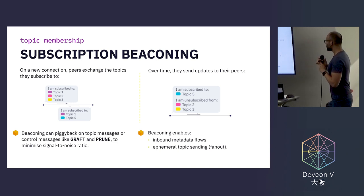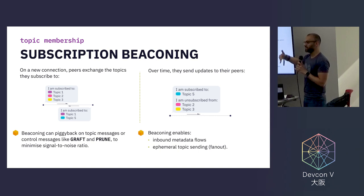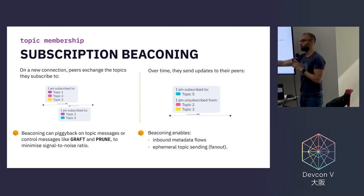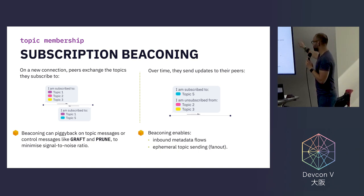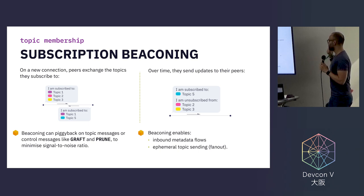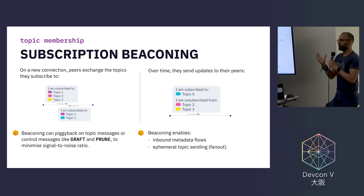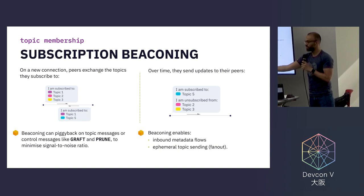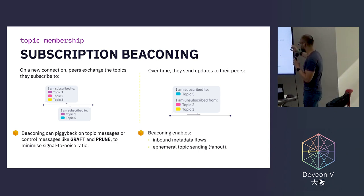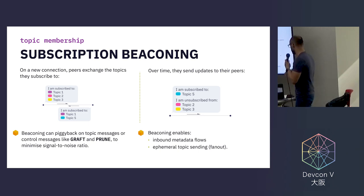There's a concept called subscription beaconing: on every new connection, peers exchange the topics they subscribe to. As the application using the Lib2B stack joins or leaves topics, it will send updates to all other peers. We don't want to be very chatty, so we've introduced the concept of piggybacking — coalescing metadata updates to peers on top of messages we need to send them anyway, such as grafts and prunes. This enables us to create ambient metadata flows.